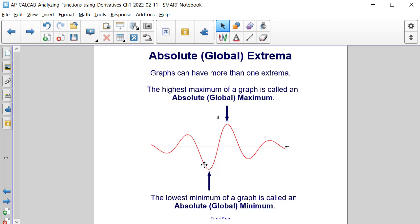And similarly, the lowest minimum value of a graph is called the absolute or global minimum. Together, these are called absolute or global extrema.